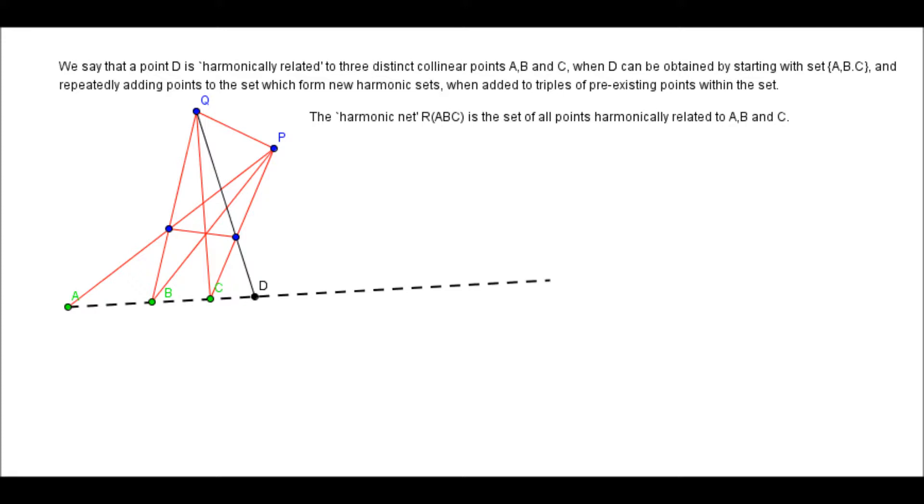So, when a point D belongs to this kind of set of points that we get by iteratively adding more and more harmonic sets, we'll say that D is harmonically related to the points A, B and C. And we'll also use some notation. Let's call the set of all harmonically related points to A, B and C the harmonic net of A, B and C. And we shall write that as R(A,B,C).